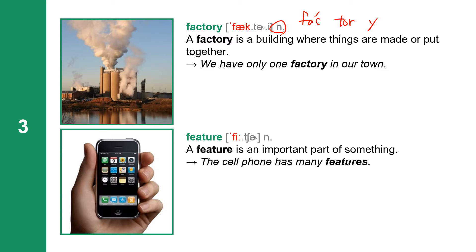Next one: feature. Feature has two syllables: F-E-A-T-U-R-E. Feature is a noun. A feature is an important part of something. The cell phone has many features.